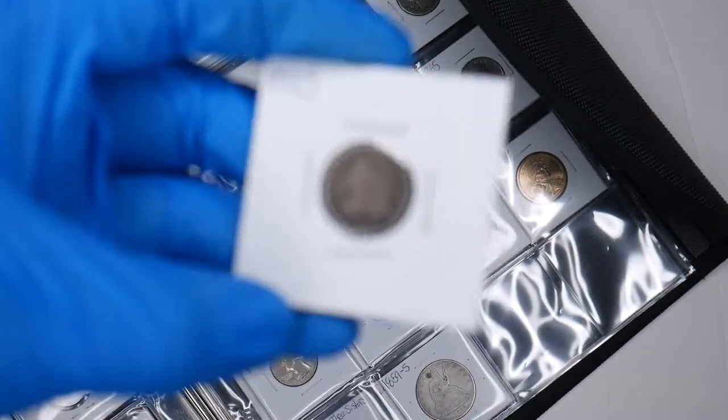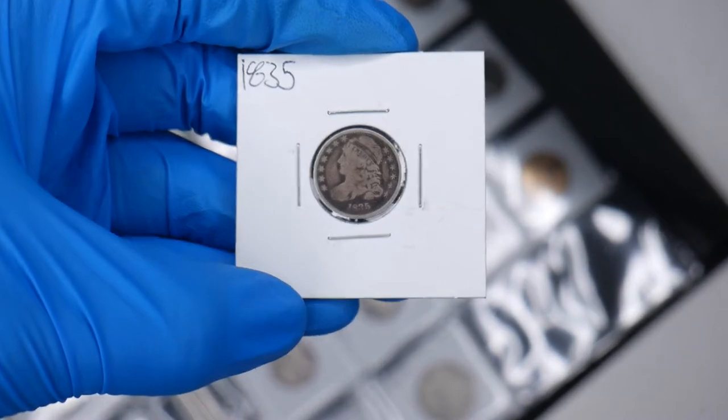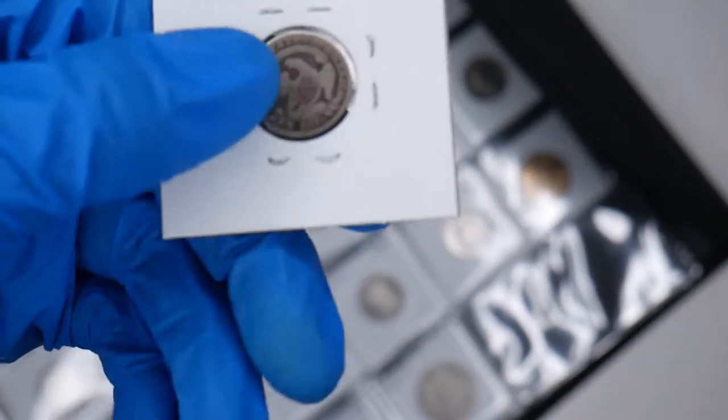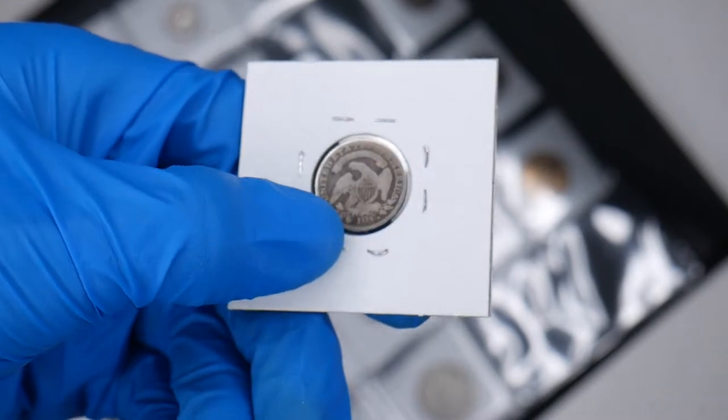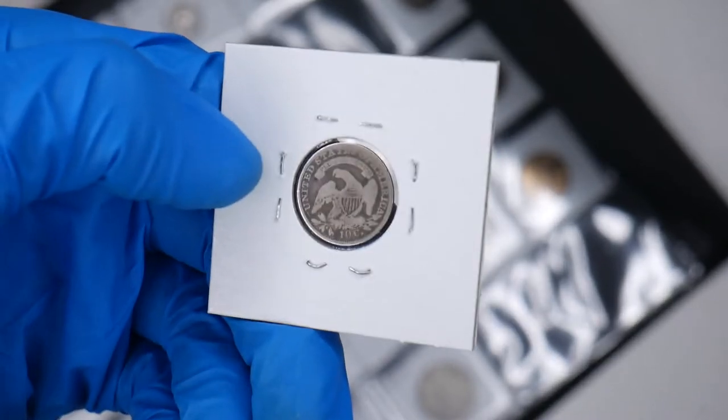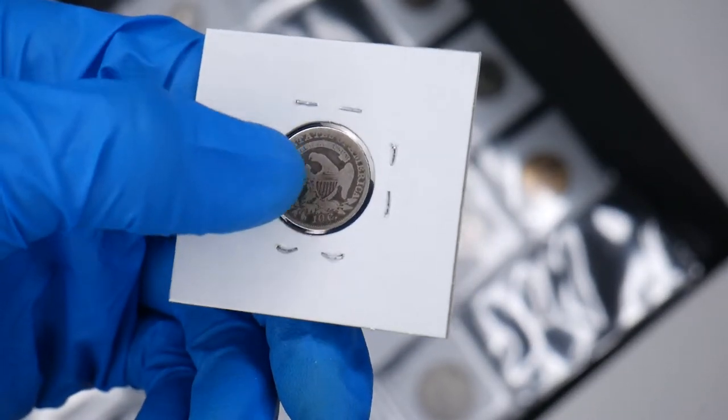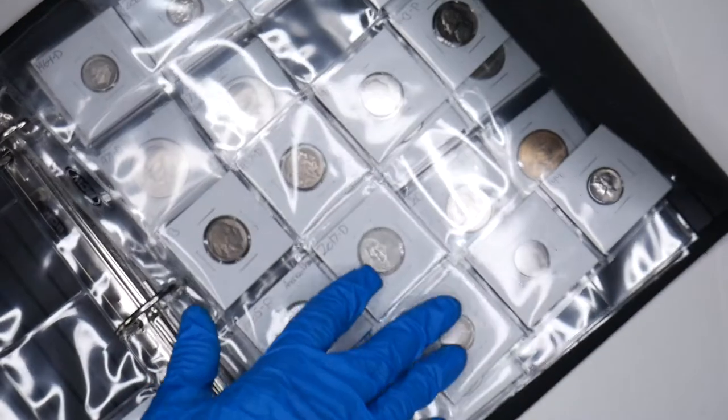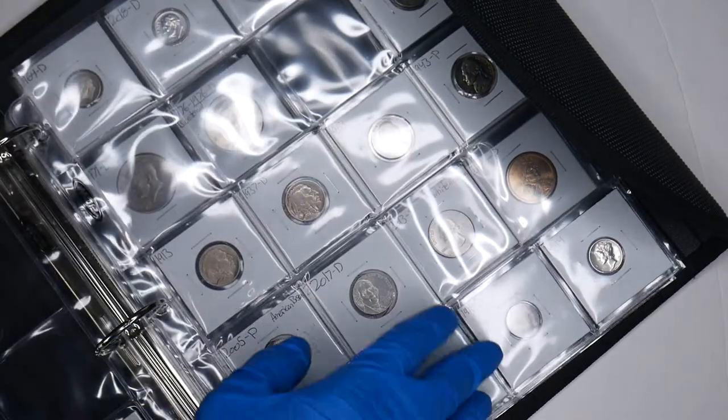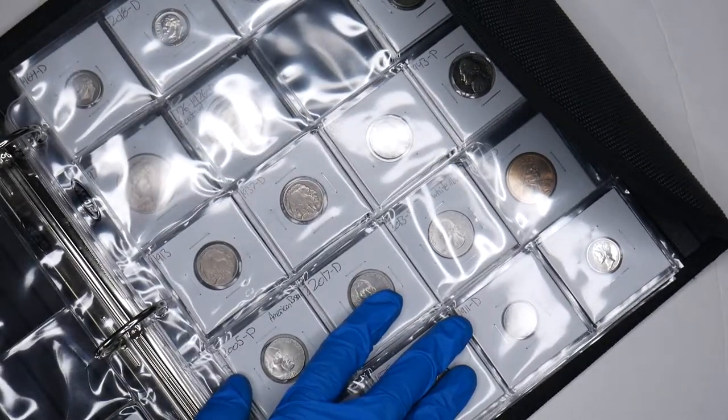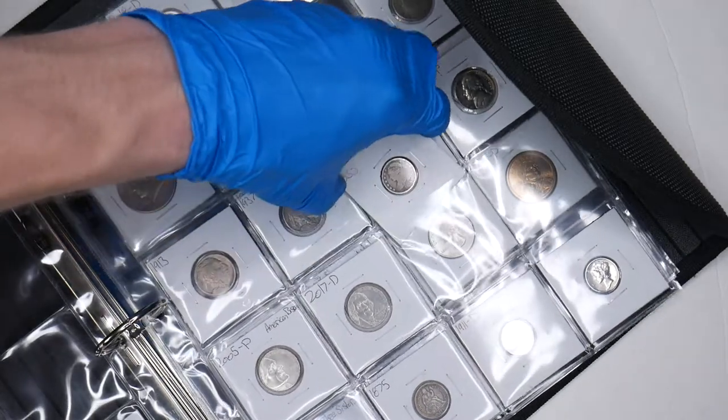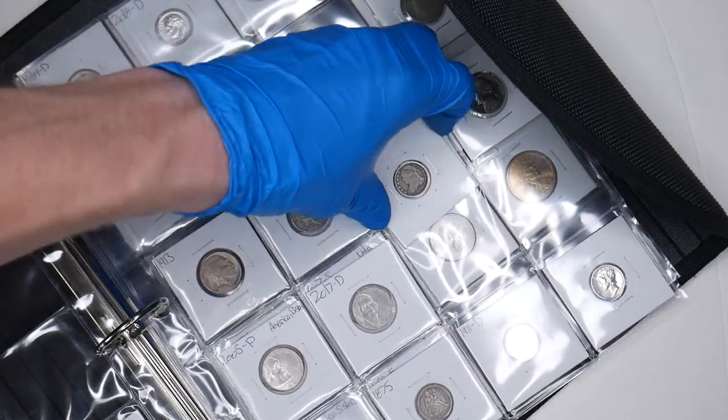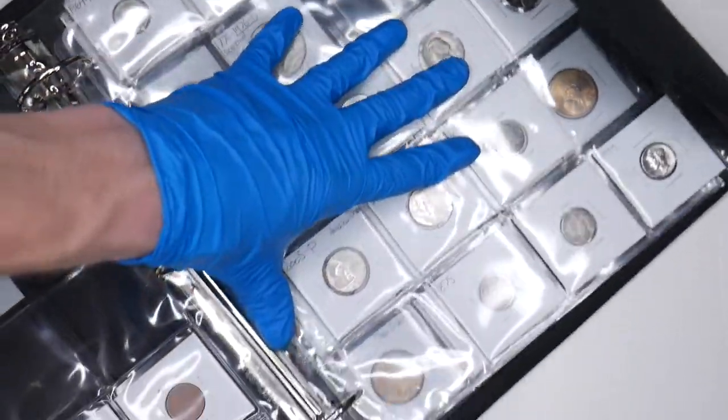So the next coin is Capped Bust 1835. This one actually, it's really cool because it has 10 C on there instead of 10 cents or dime. So it didn't actually say dime on here at all, has a nice legend up top. Really cool. This actually goes on the other page. It goes right after this one. So right here. Wow. I was going to say it slipped in nicely, but it still kind of did.